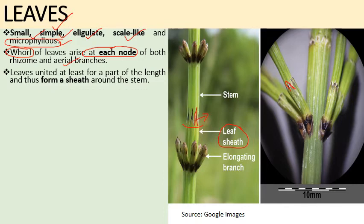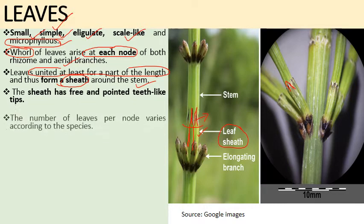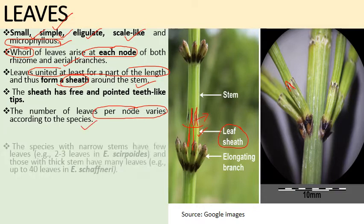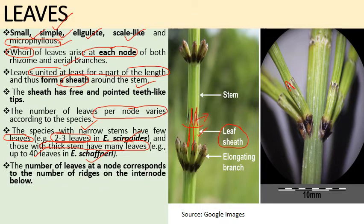The number of leaves per node varies from species to species. Species with a narrow stem have few leaves — for example 2 to 3 leaves in Equisetum scrypoides, the smallest species. Those with thick stems have many leaves — for example up to 40 leaves in Equisetum schaffneri. The number of leaves at a node equals the number of ridges in the internode.